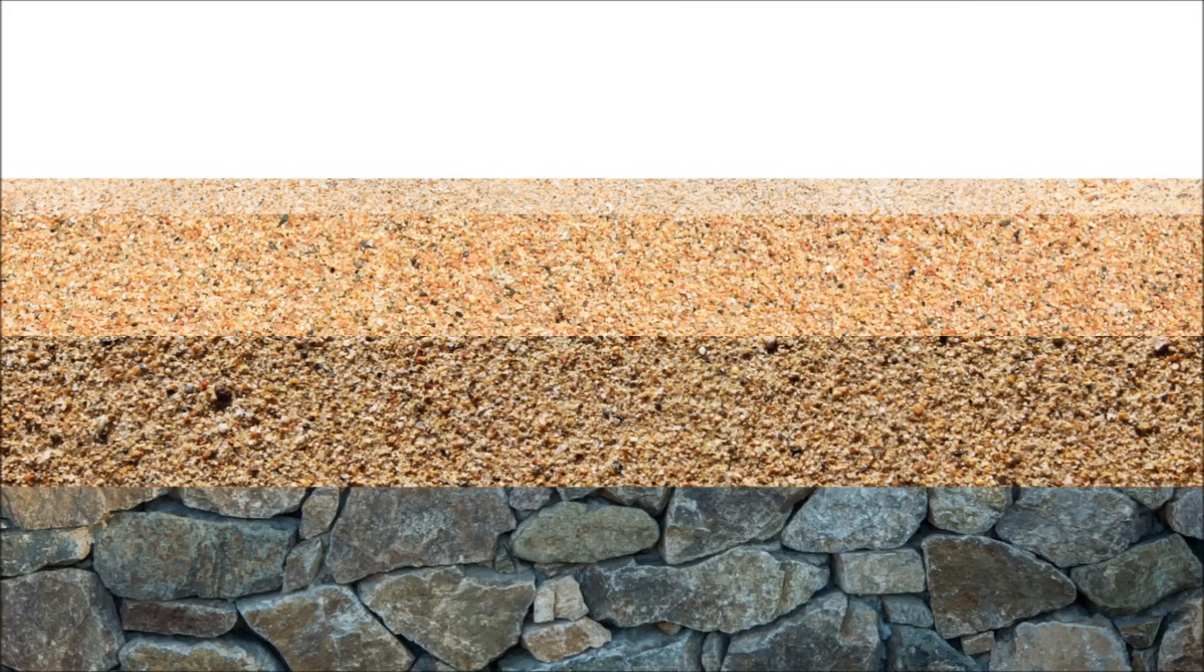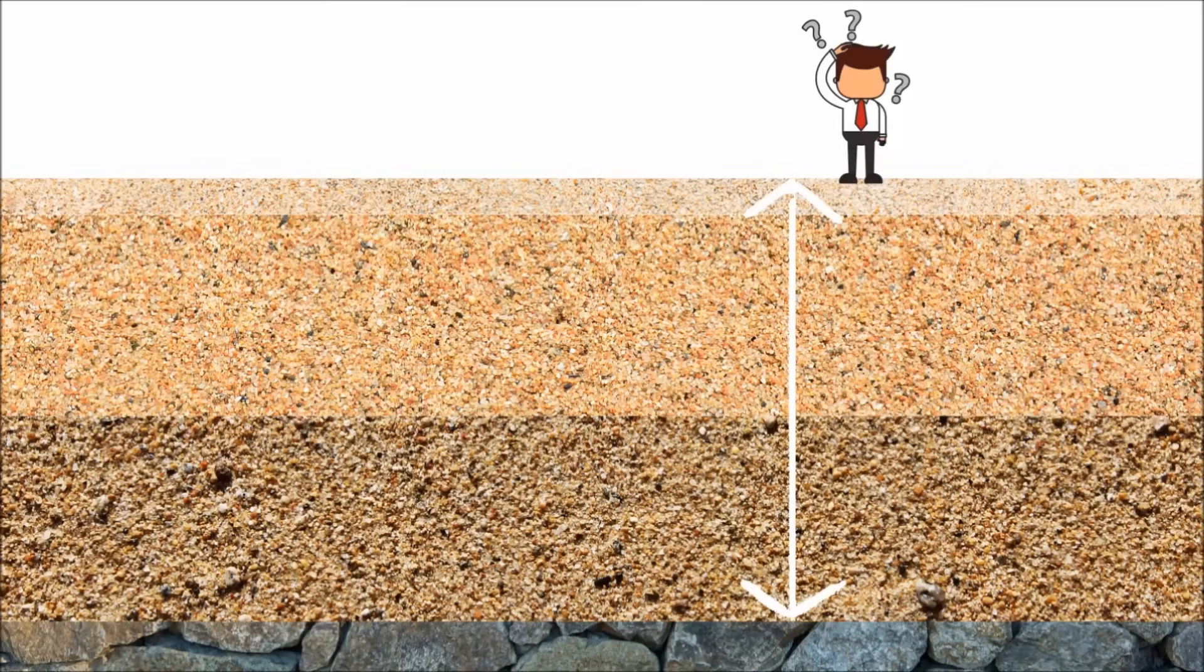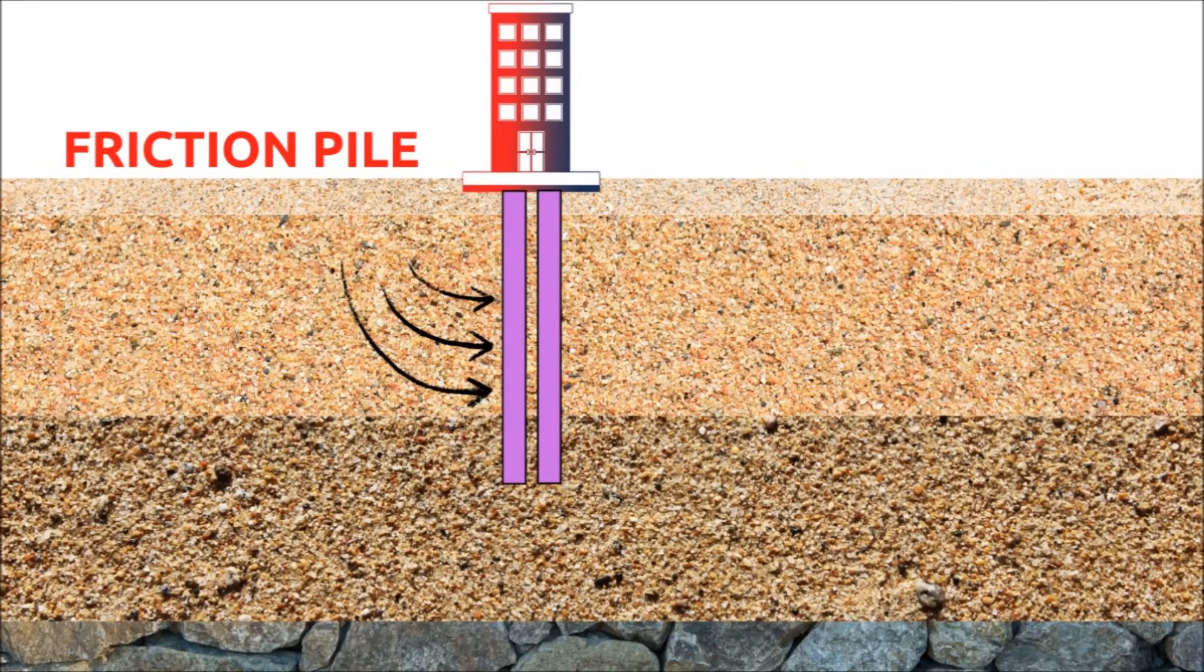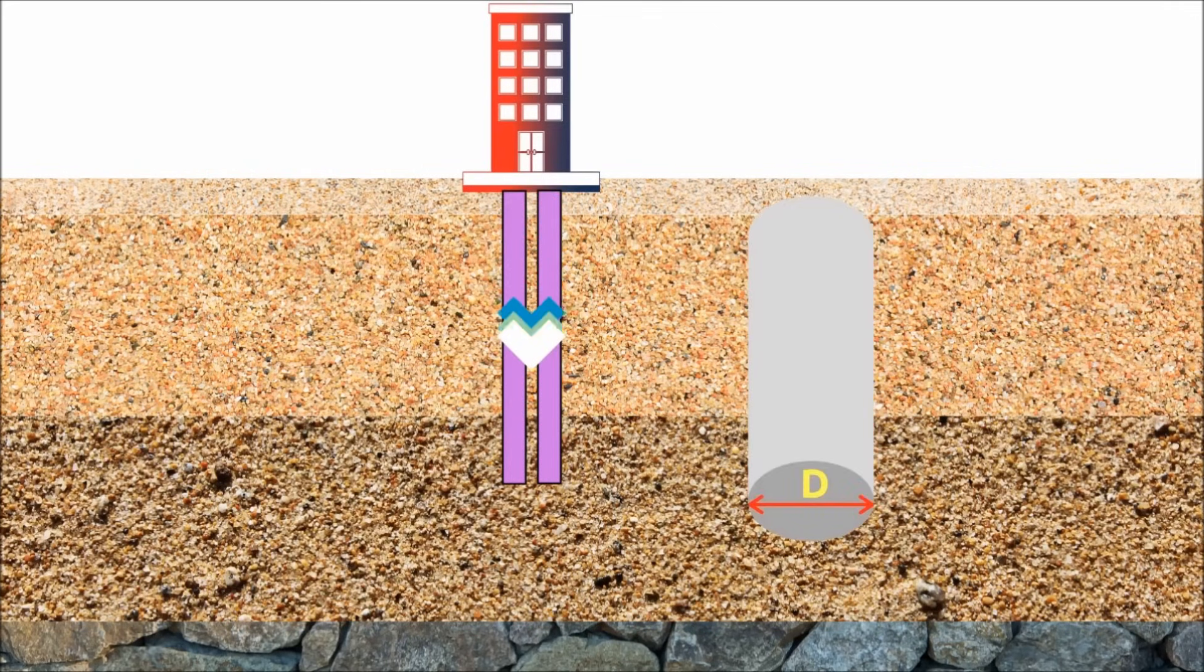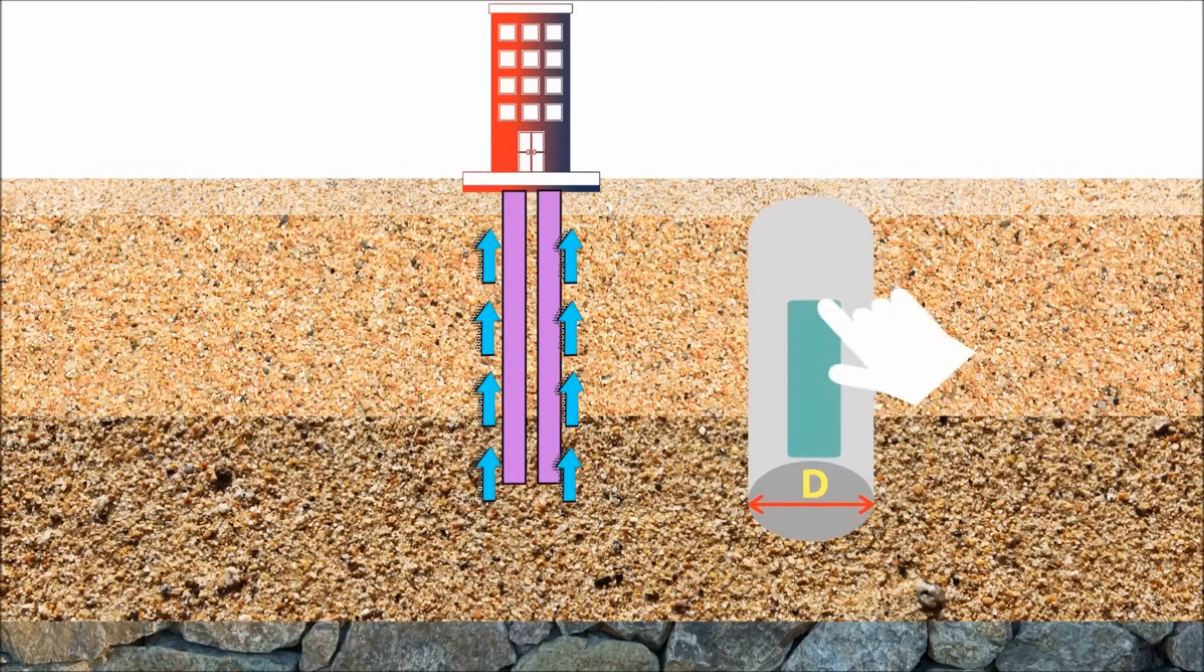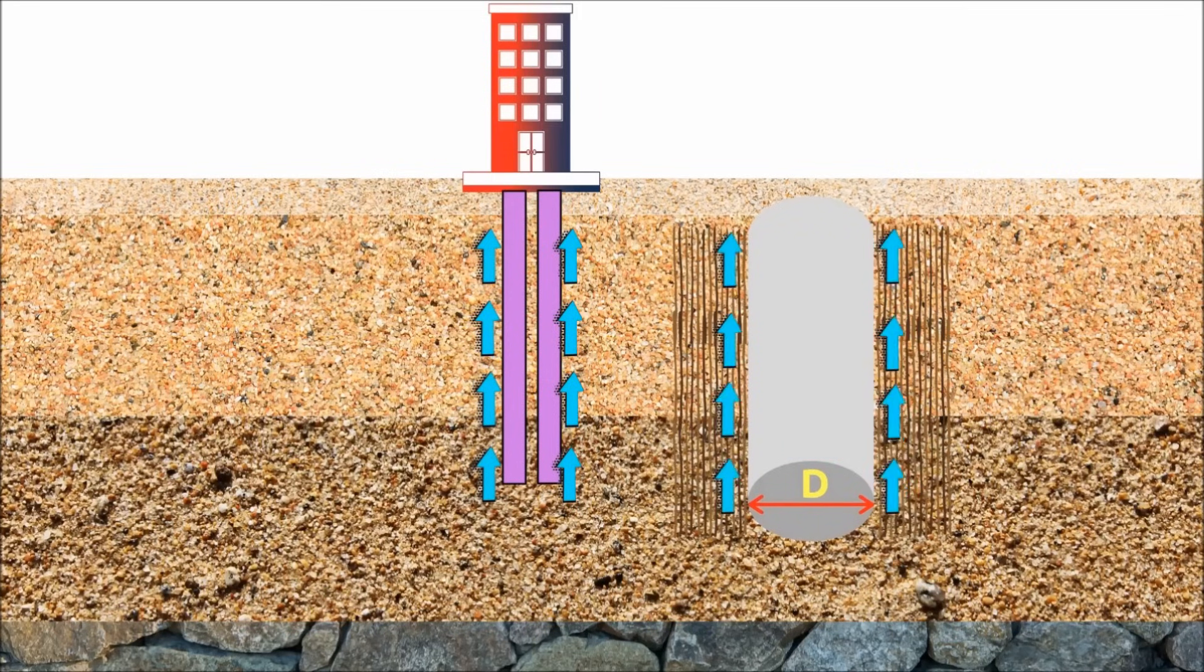Friction piles. When the hard strata exists at large depth, friction piles are used. It transfers the load from the structure to the soil by frictional force between the surface of the pile and the soil surrounding the pile.